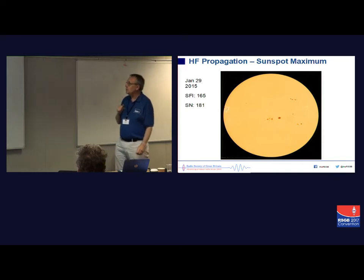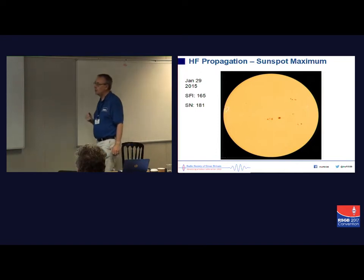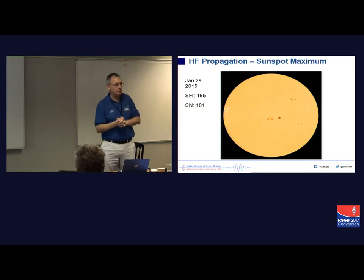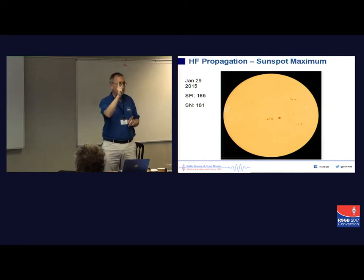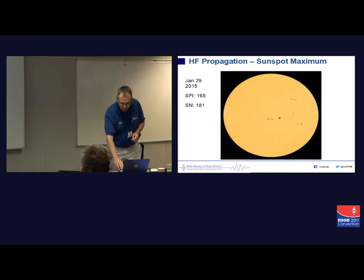Just to cheer you up — that's what the sunspot looks like at sunspot maximum. The last maximum in 2015 had a solar flux index of 165 and a sunspot number of 181. Quick note: when you read that the sunspot number is 25, that does not mean there are 25 sunspots. The way it works is 10 for a group and one for each sunspot, so one sunspot on the sun gives a sunspot number of 11. Some people start counting and find it doesn't add up — that's why.